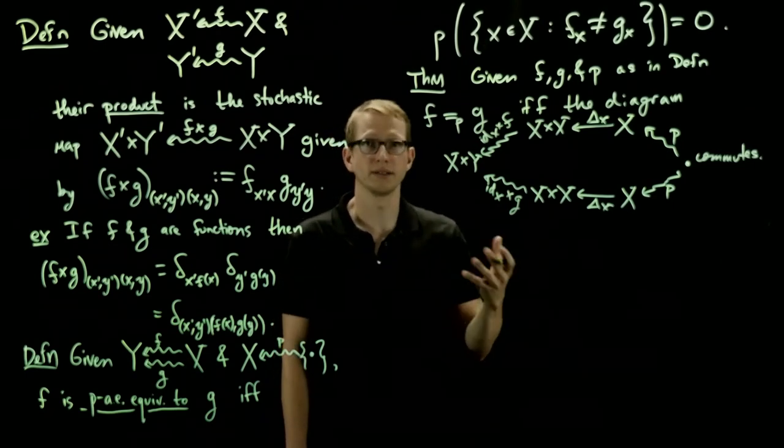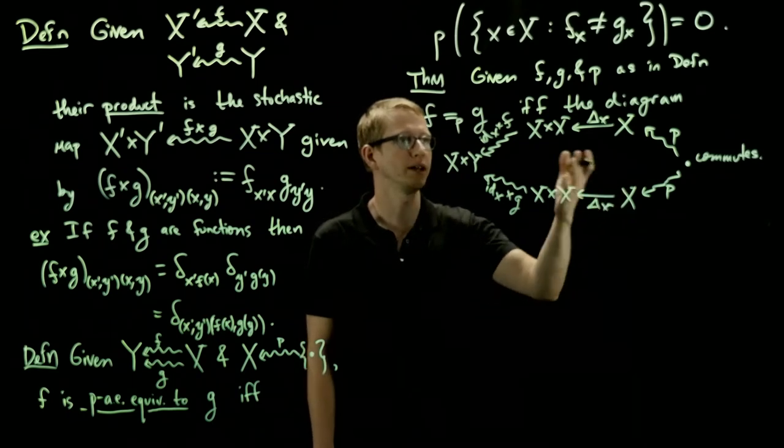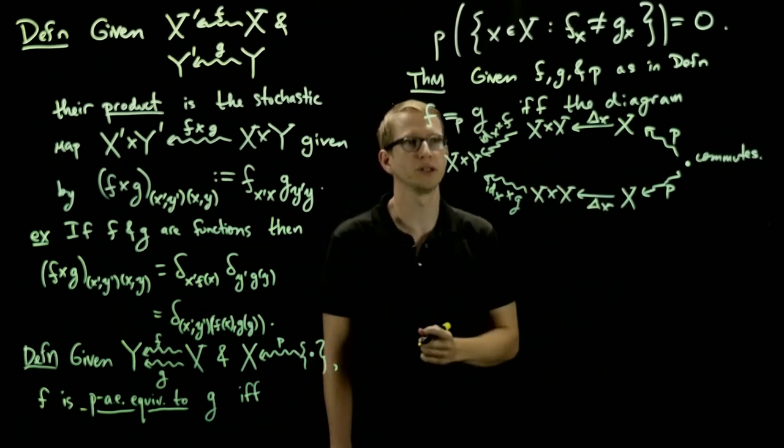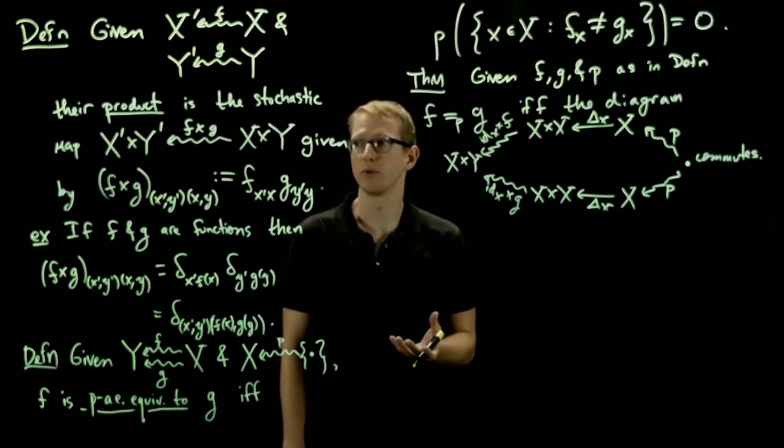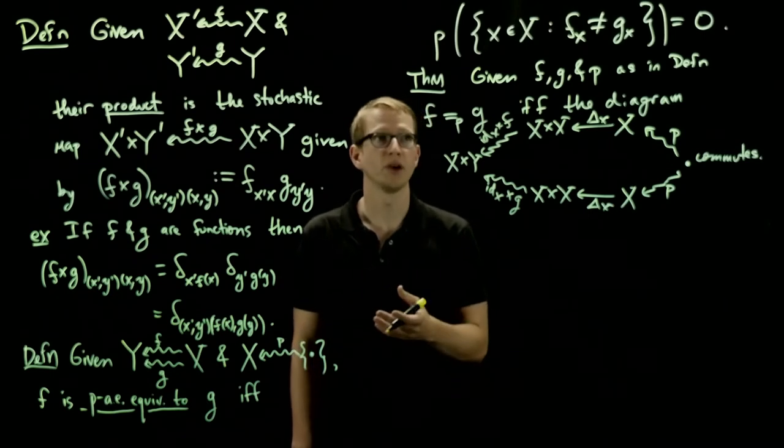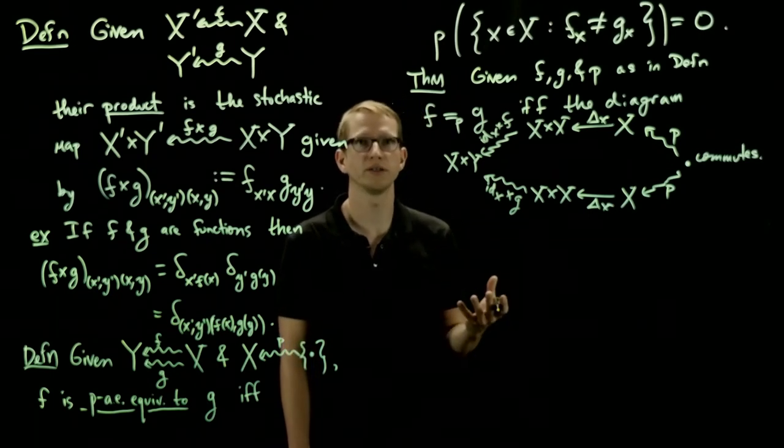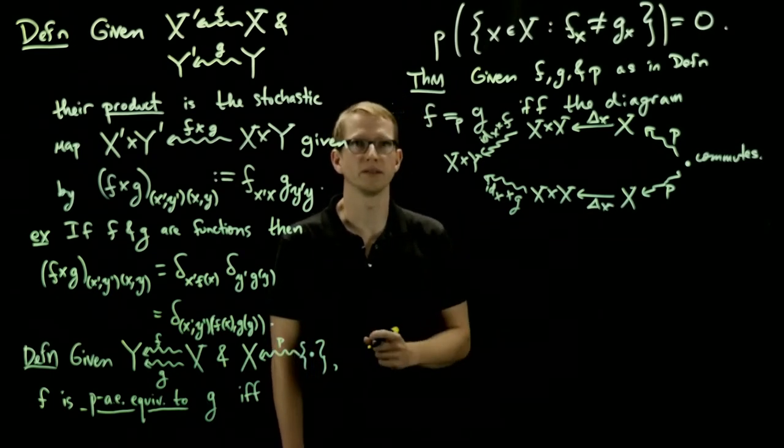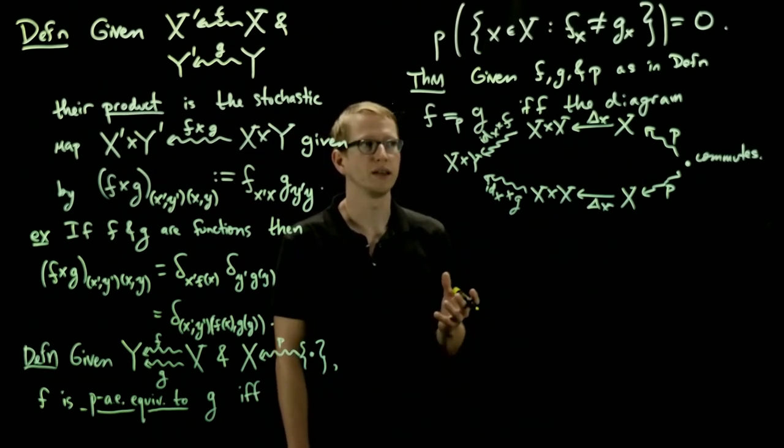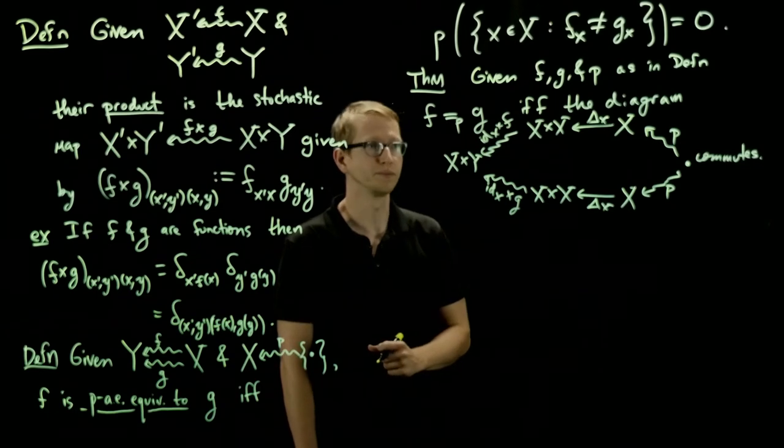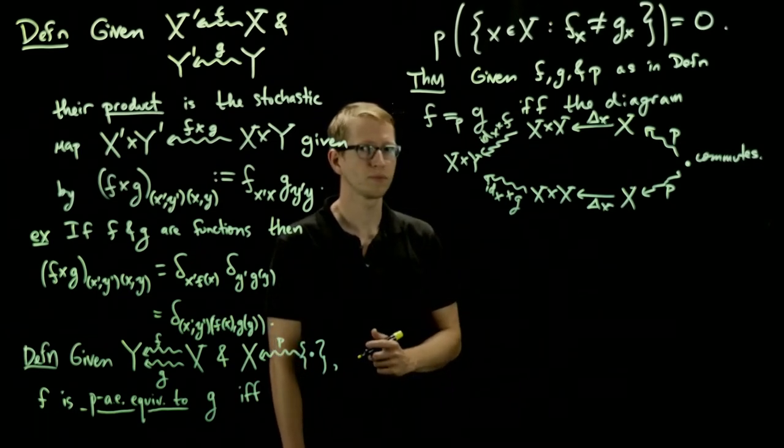Where we replace our finite sets and stochastic maps with certain kinds of C-star algebras and completely positive unital maps. And these sorts of objects are relevant in quantum information theory.